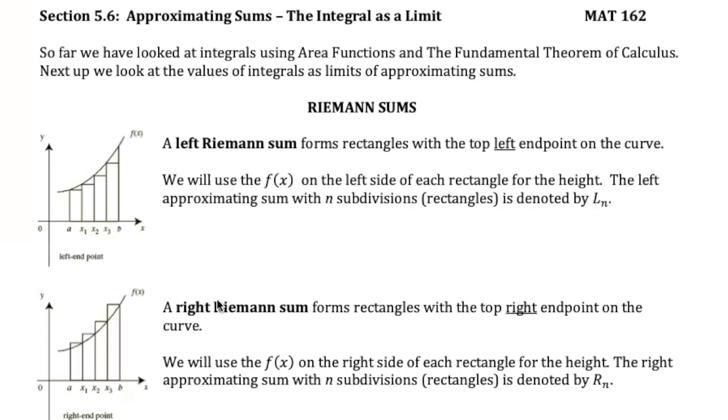A right Riemann sum, you put the top right corner of your rectangle on the function. That's denoted by R sub n.